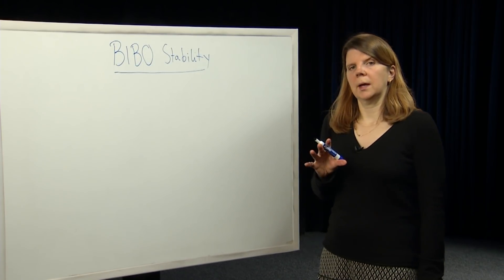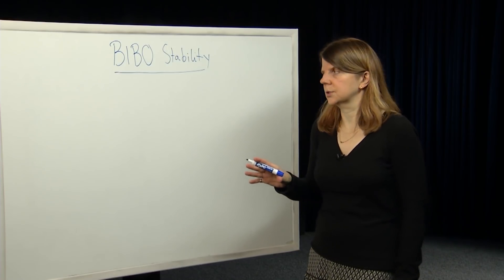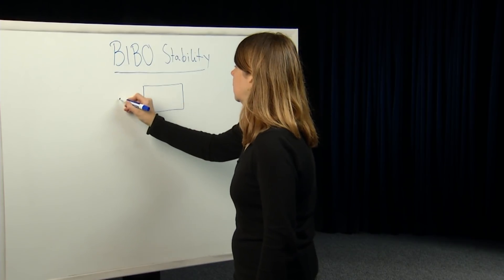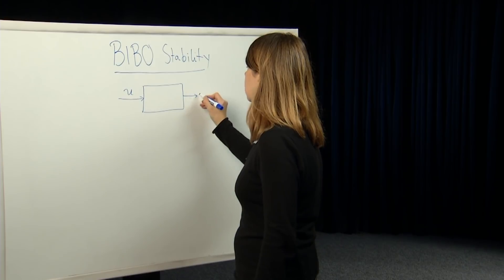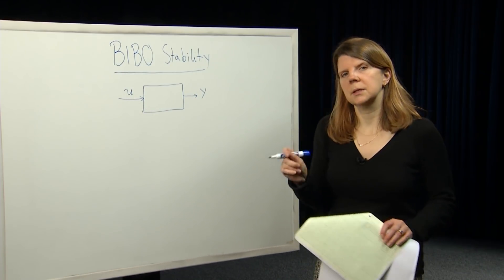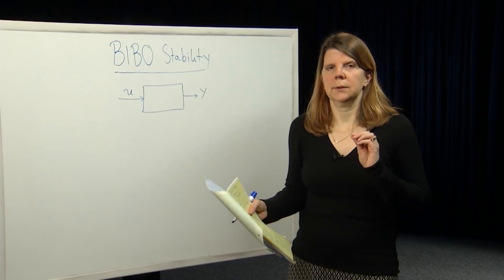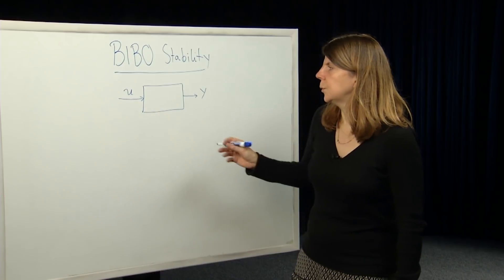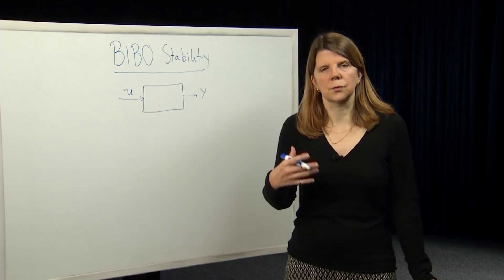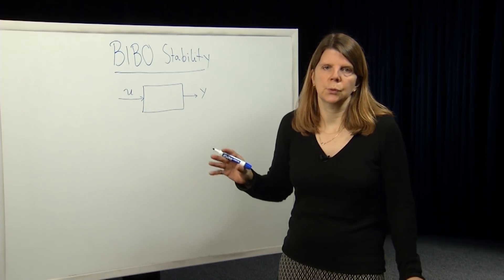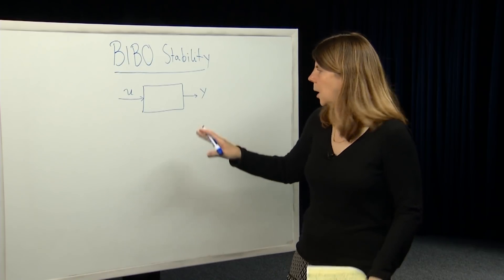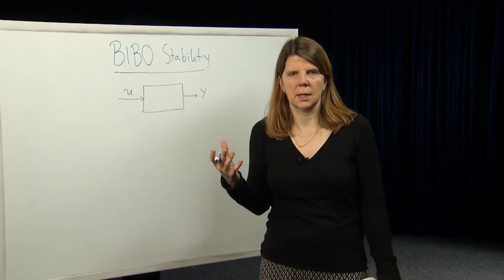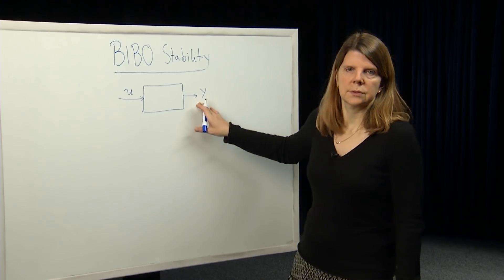Let's step away from our state-space point of view and think about more of an input-output point of view for a system. I like to think of a system as a block diagram with an input U and an output Y. For a physical system, the inputs might be things that you can manipulate — for a mechanical system, you could apply forces. You or an automated controller could apply, through various actuation surfaces, electrical signals or forces or torques, to get the system to move in different ways. And typically we measure parts of the system — positions, velocities, temperature — and those are the outputs.